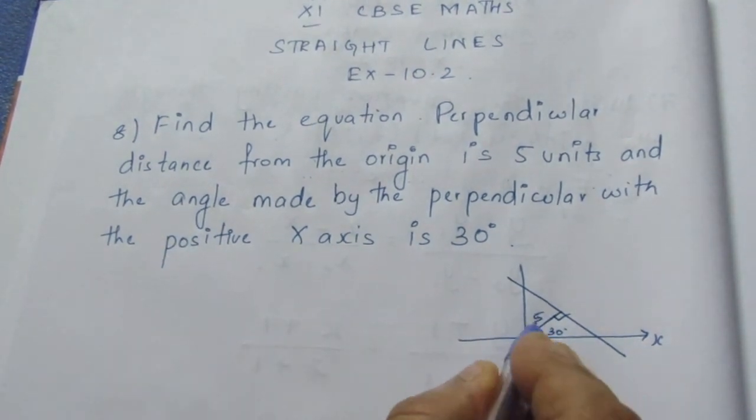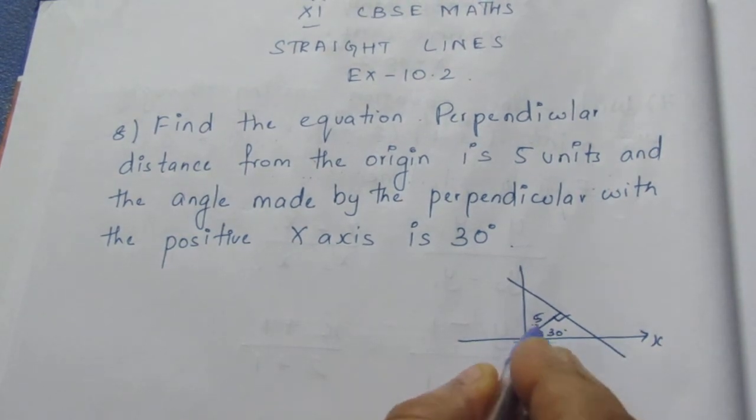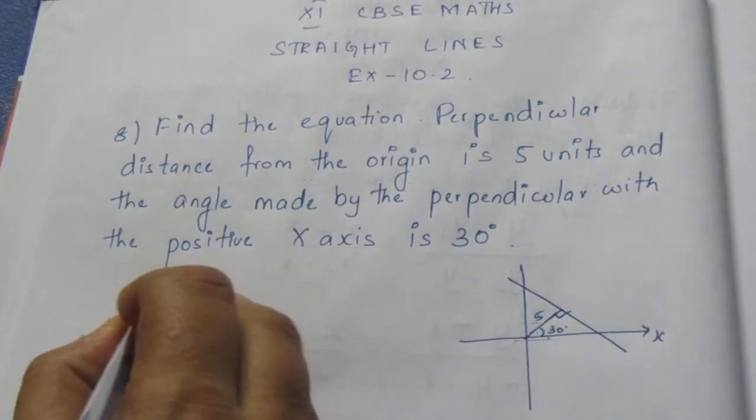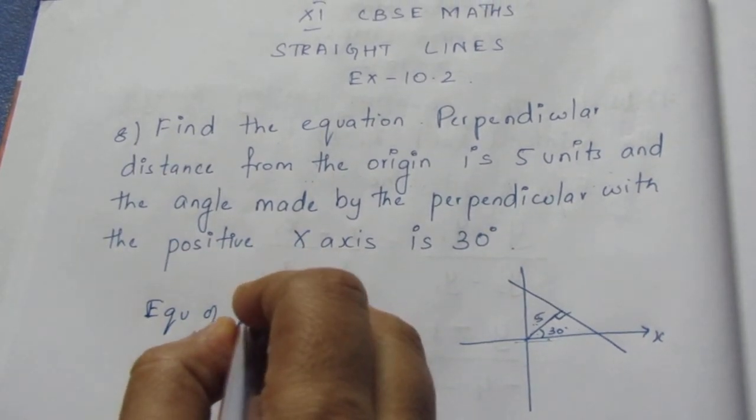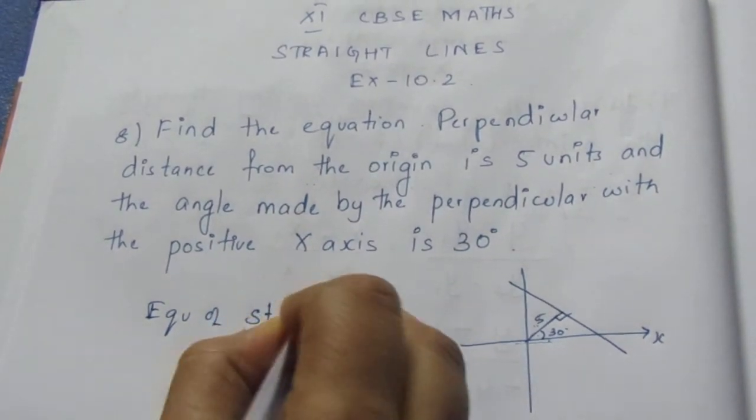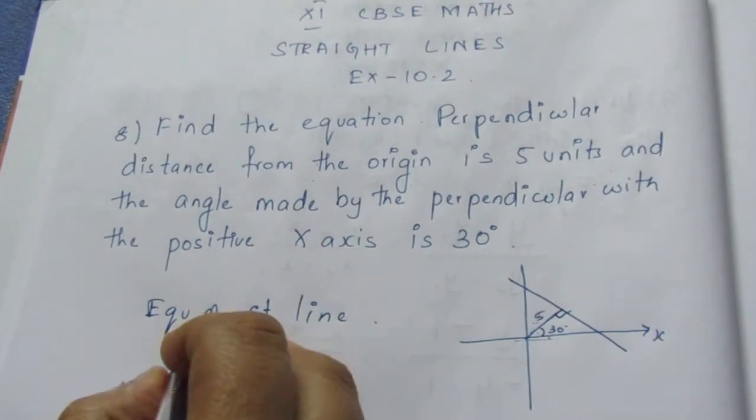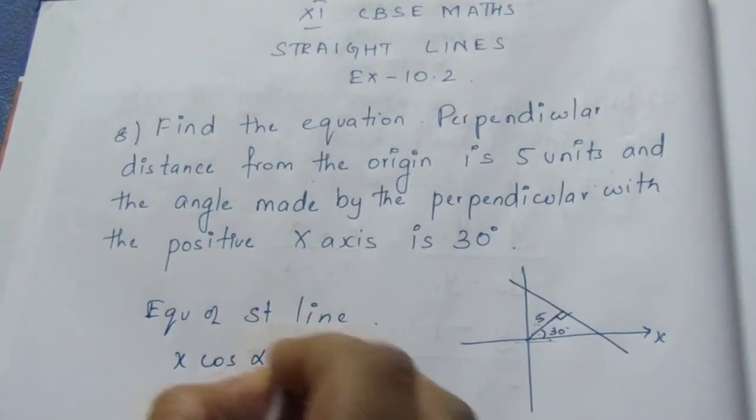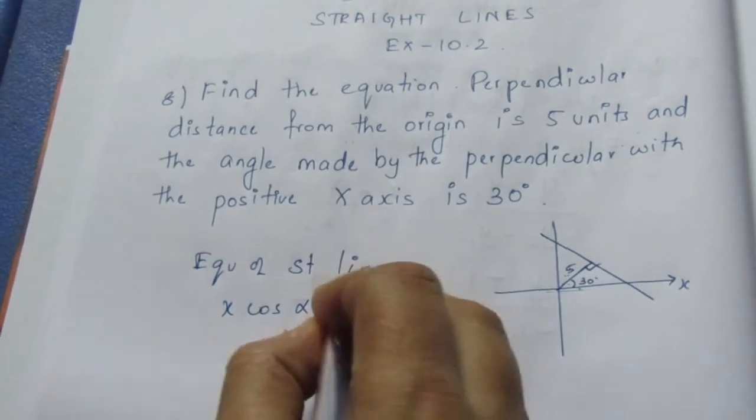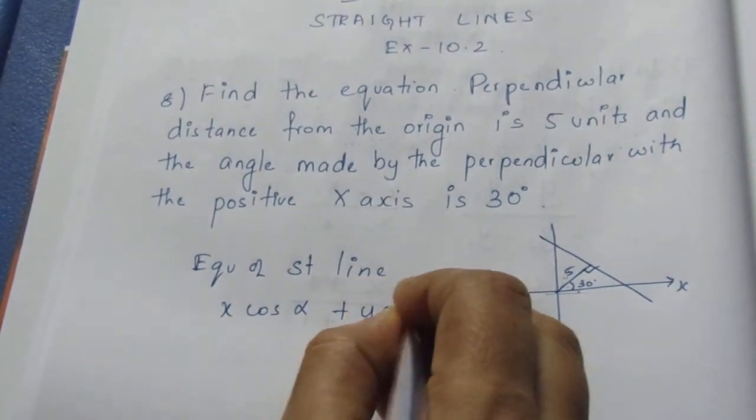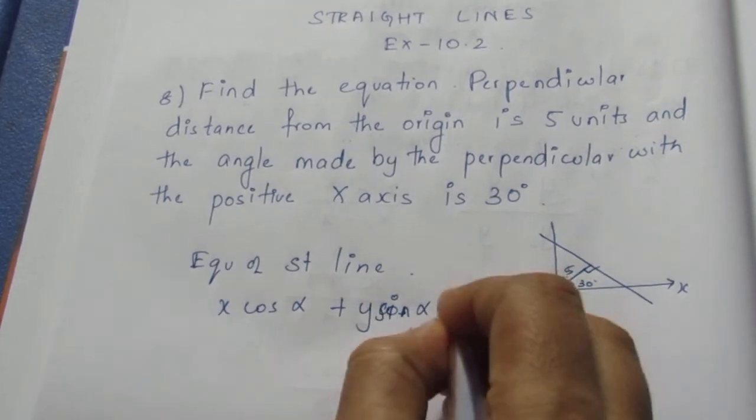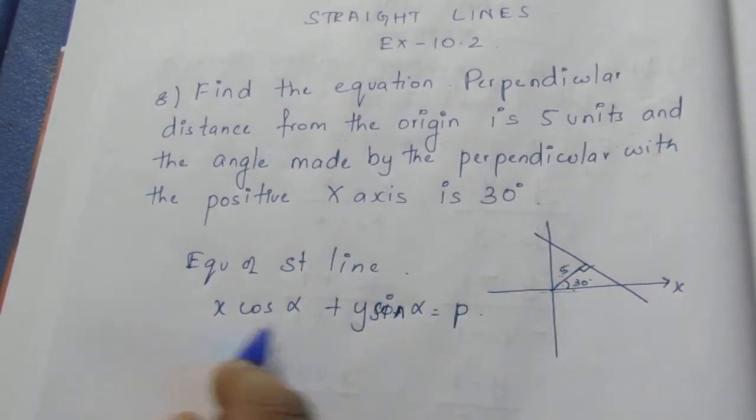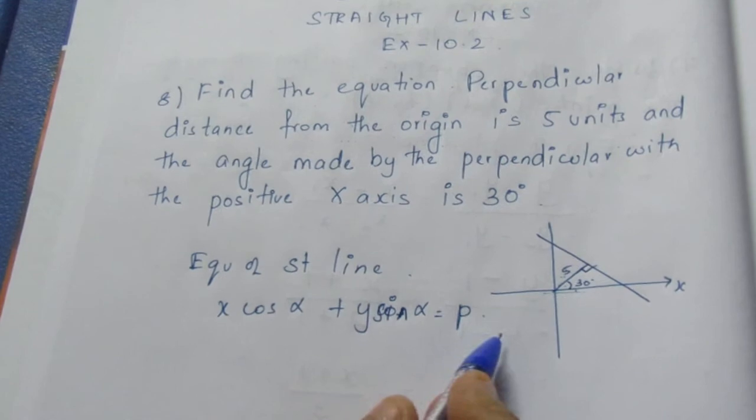Here the perpendicular distance and angle are given. So the equation of a straight line when perpendicular distance and angle are given is x cos α plus y sin α equals p. This is the formula: x cos α plus y sin α equals p.